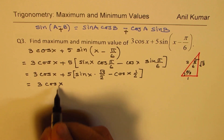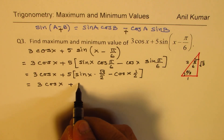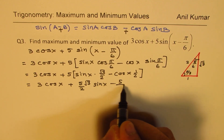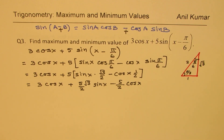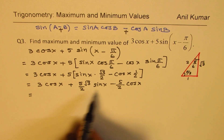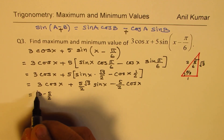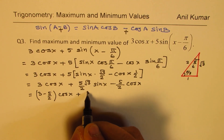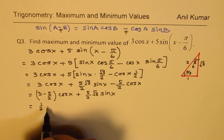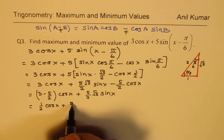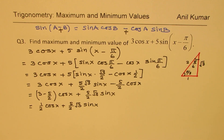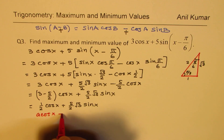Opening the bracket and applying the distributive property — multiplying both terms by 5 — we get 3 cos x plus (5√3/2) sin x minus (5/2) cos x. Combining the cos x terms: 3 minus 5/2 equals one half. So the expression becomes (1/2) cos x plus (5√3/2) sin x, which is now in the form A cos x plus B sin x.